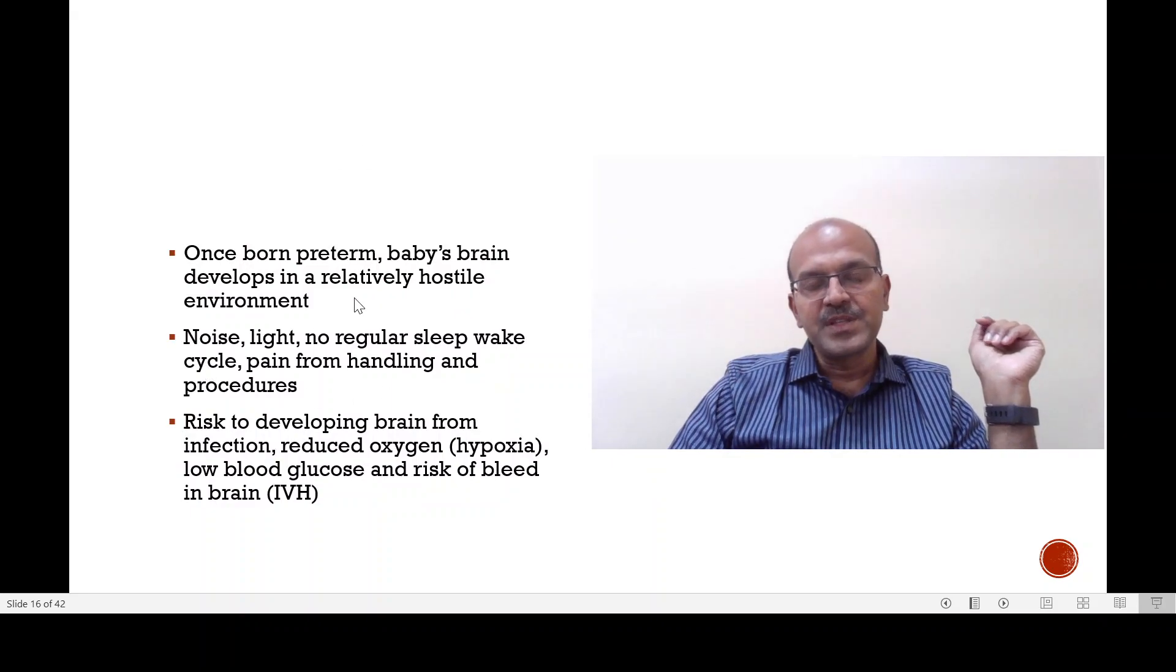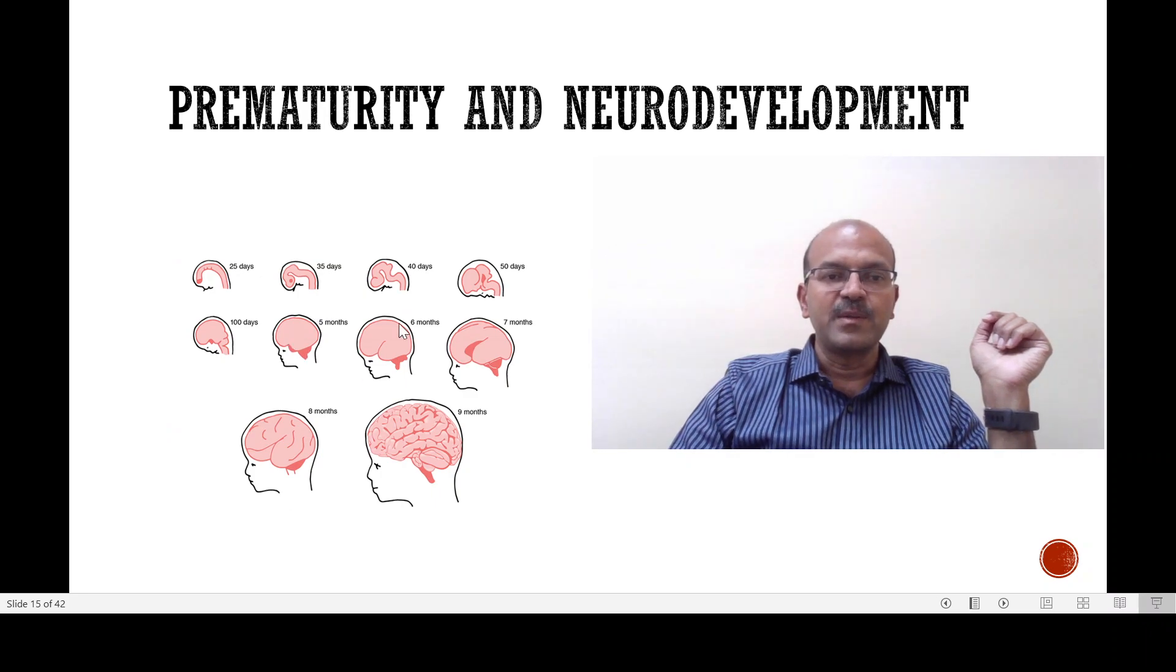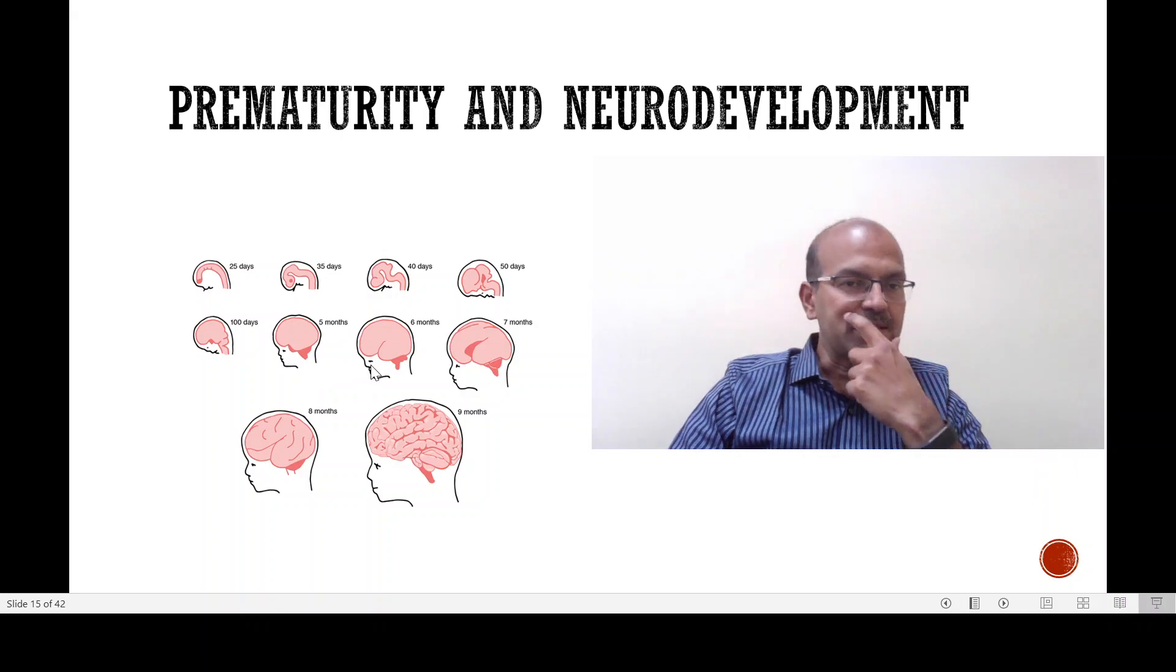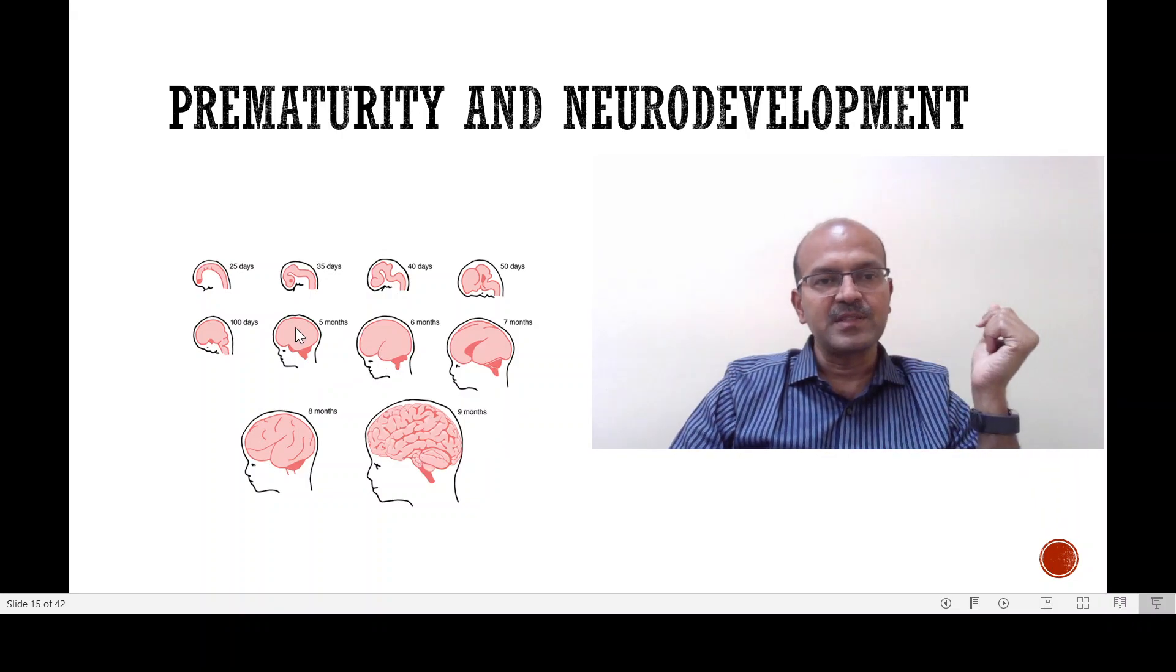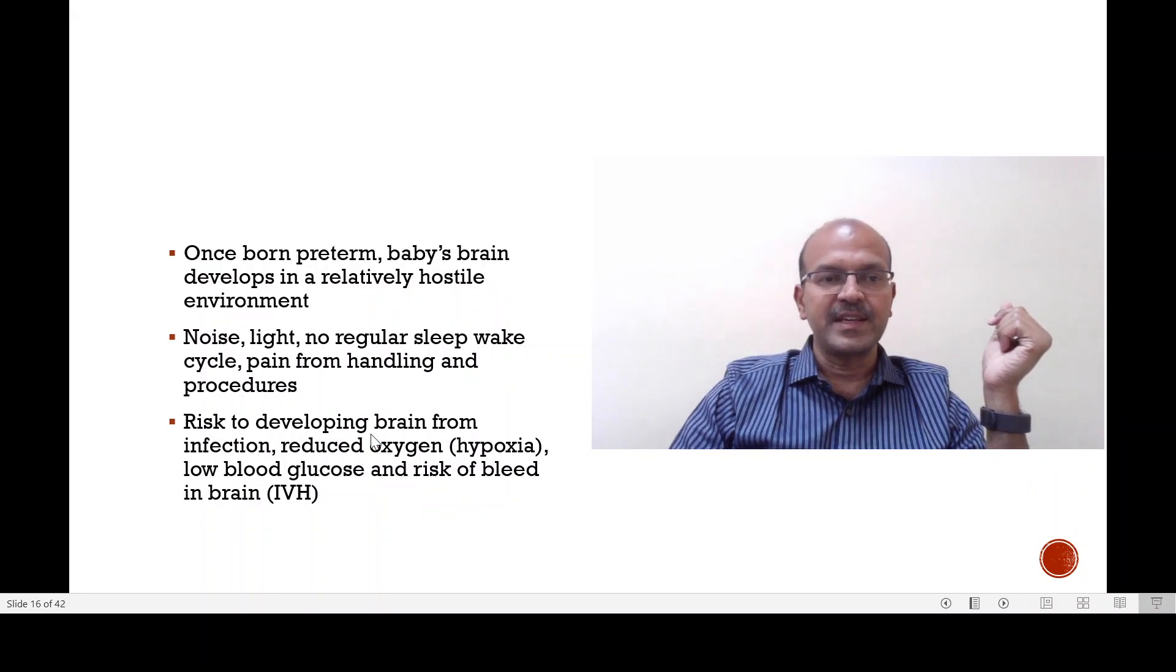Once the baby is born premature, the quiet environment in the womb is disturbed. The baby's brain is developing now in a relatively hostile environment. I showed you how much development of the brain happens from say the fifth month when we can start saving babies to the ninth month. All this development which should have happened in the quiet environment of the womb is now going to happen outside.